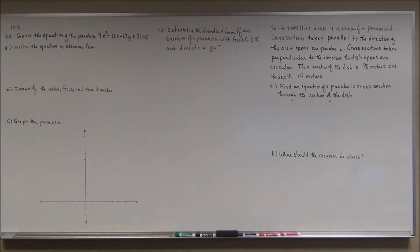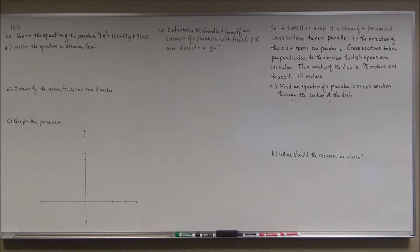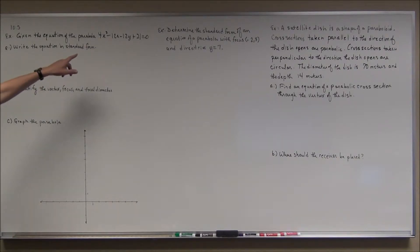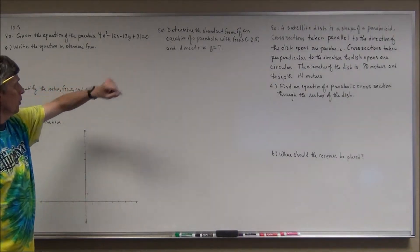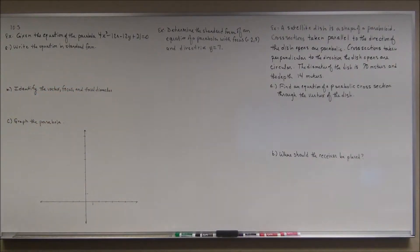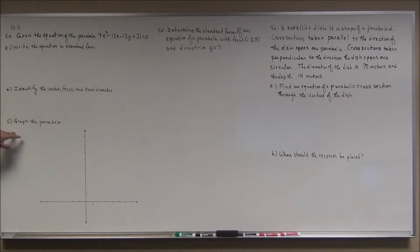We're going to finish up section 10.3 in this video, going over some examples and an application problem. First, an example where the equation is not in standard form. Given the equation of the parabola 4x² minus 12x minus 12y plus 21 equals 0, write it in standard form, then find the vertex, the focus, and the focal diameter, and graph it.